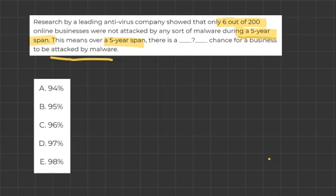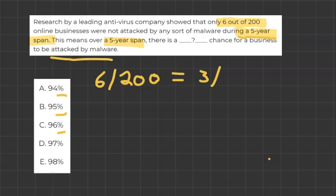It's saying that 6 out of 200 were not attacked. So I'll write that here: 6 out of 200. If I want to make this easier and move it into a percentage — because all my answers are in percentage — I would just halve it and do 3 over 100. And that means it's 3%, because percentage is out of a hundred.